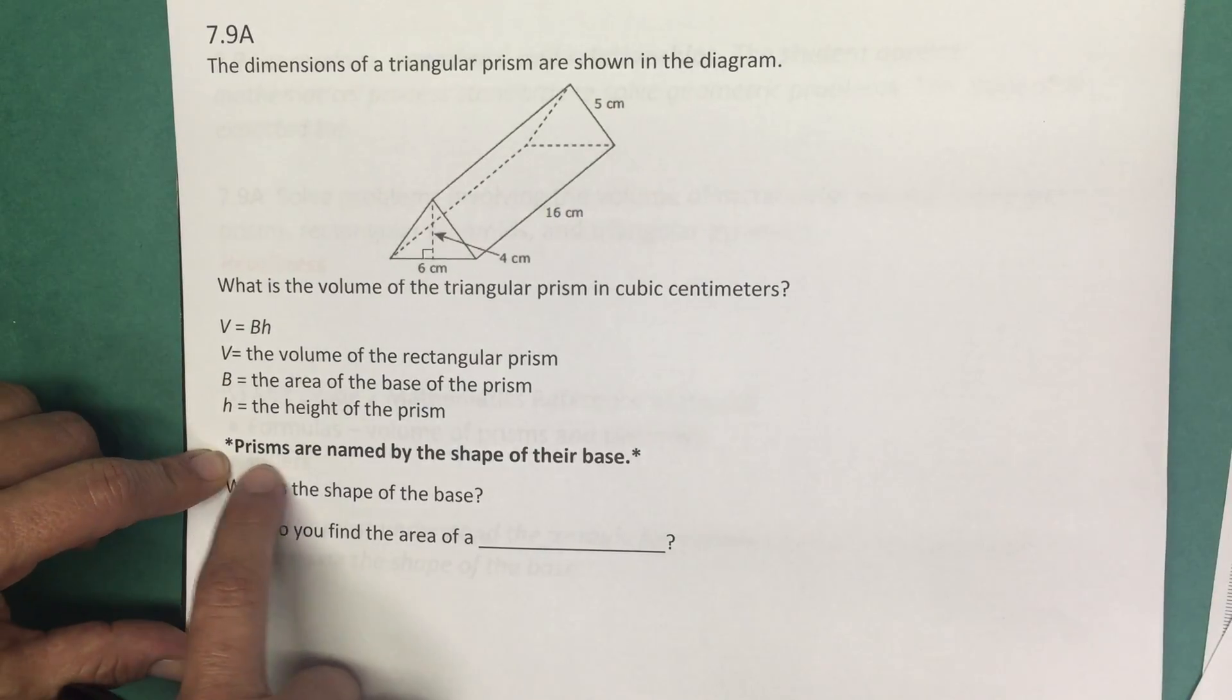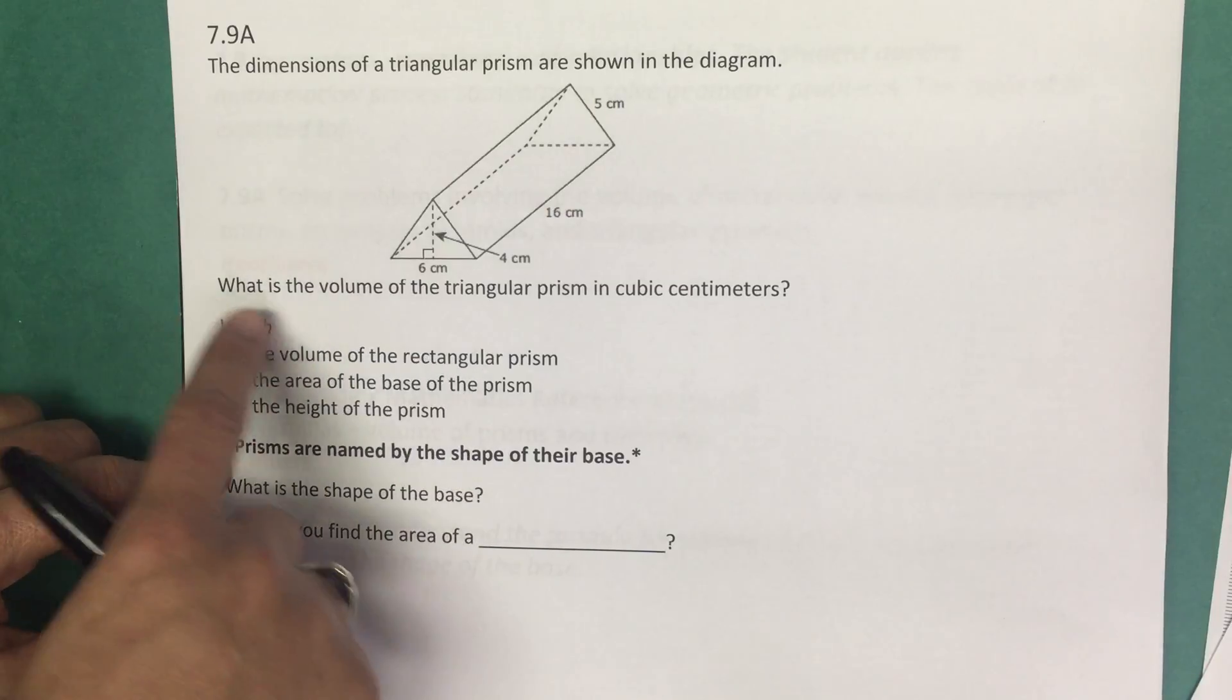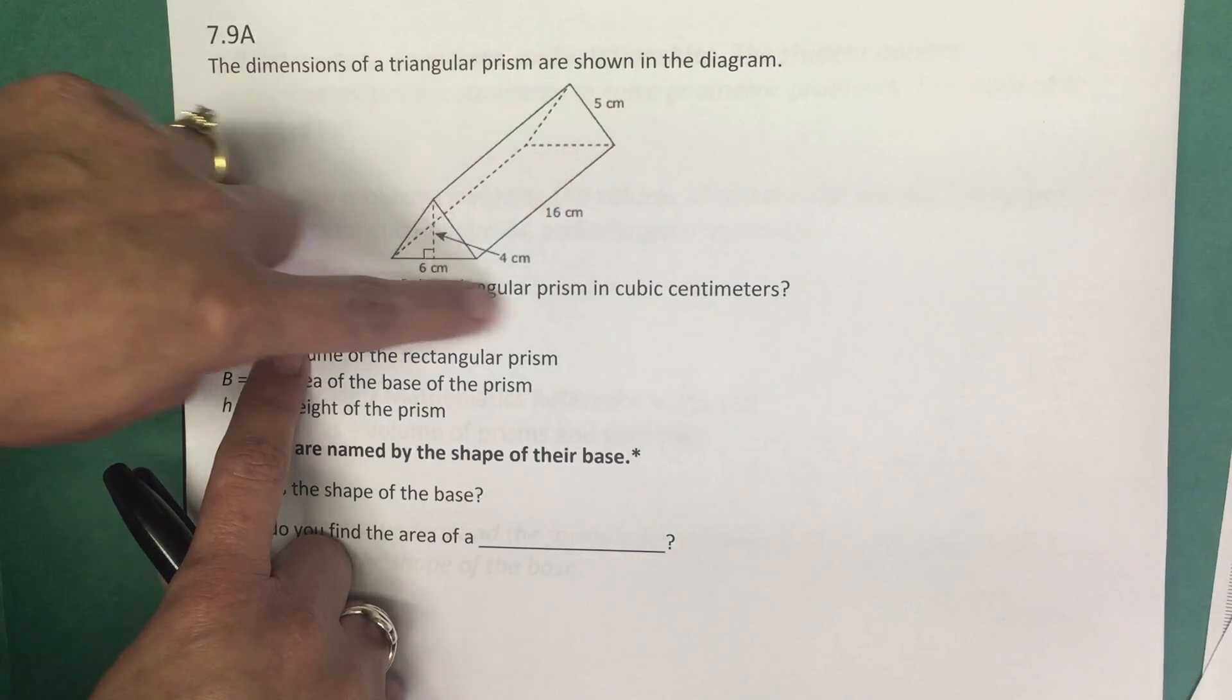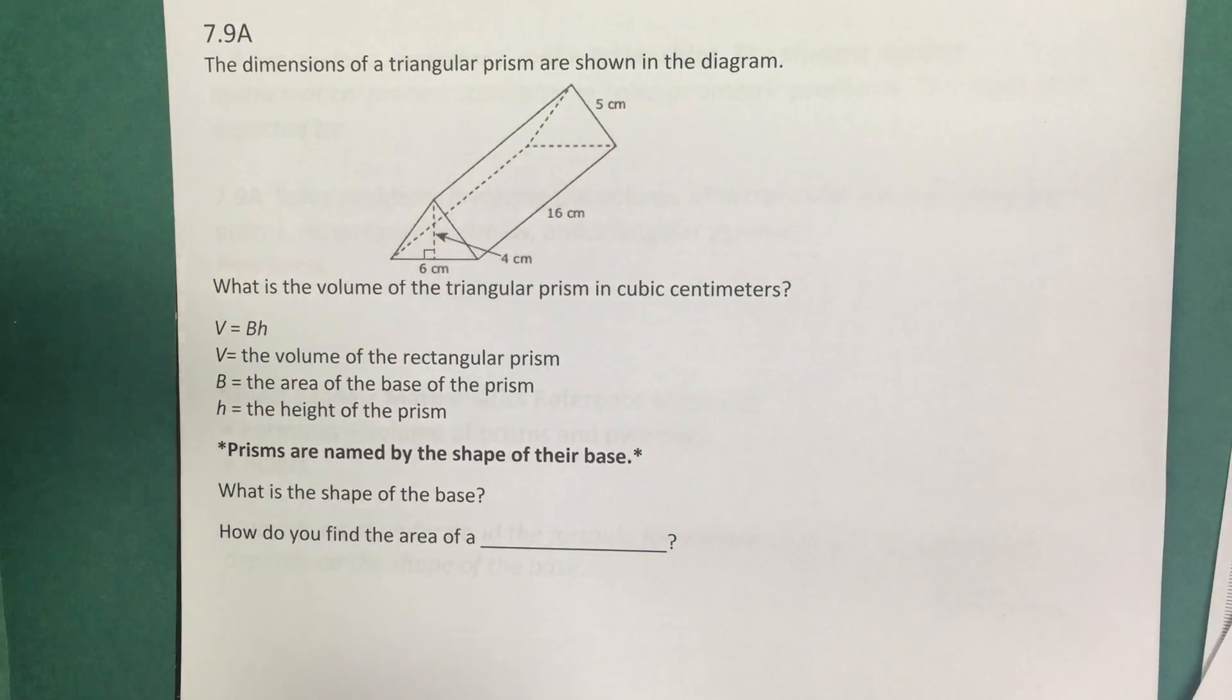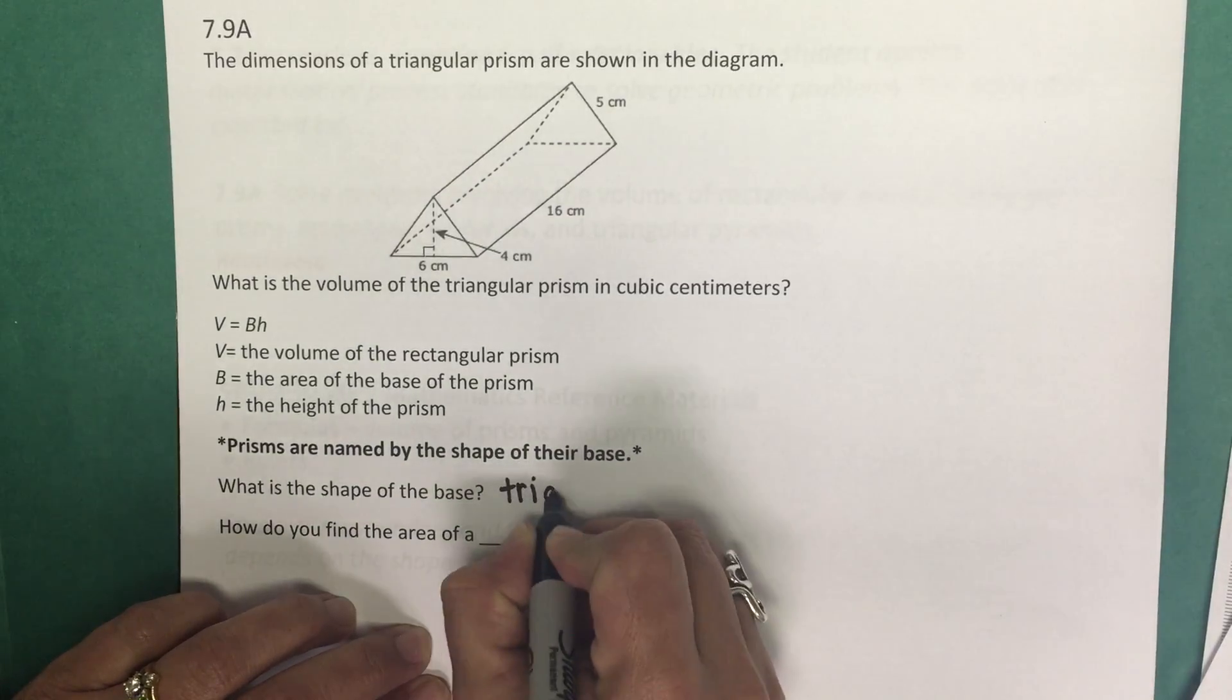Something important to note is that prisms are named by the shape of their base. So if we are told that we have a triangular prism, what is the shape of the base? Well, the shape of the base is going to be a triangle.